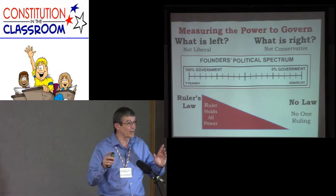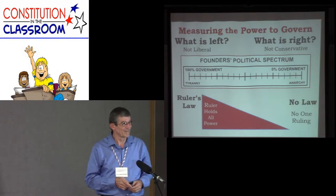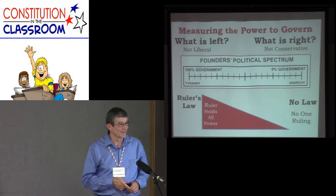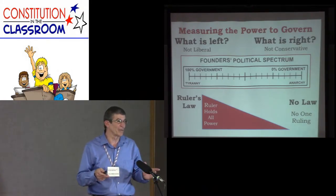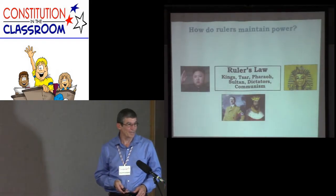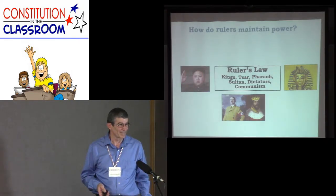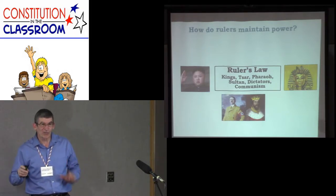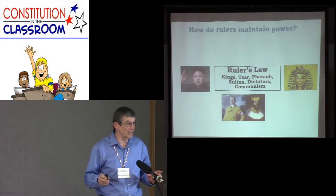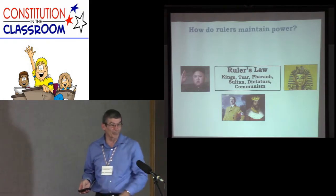A participant answers: it means the people are supposed to be our government — not 'we the government.' It was the people of our area, our country, and all the colonies. This government belongs to us — it is of the people. It might even be better to say 'we the persons,' because it's not so much the collective idea as the individual idea. Now, let's look at ruler's law — if we understand what it looks like, we will be able to identify it immediately in our own midst.